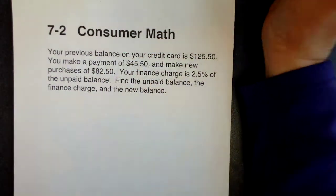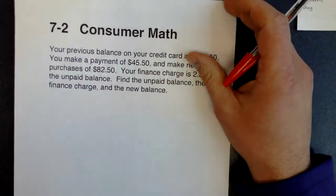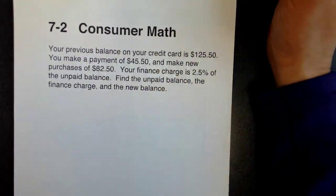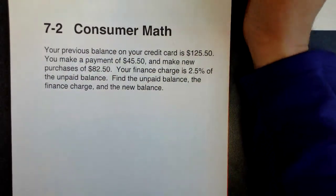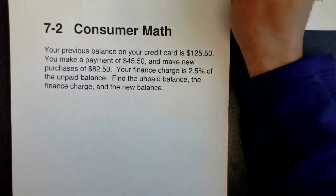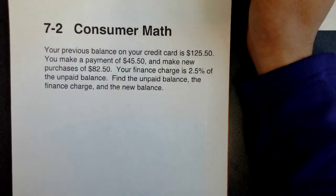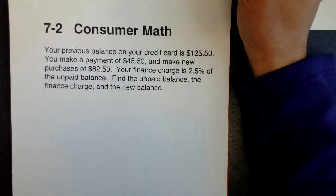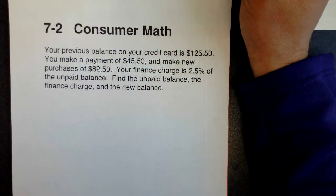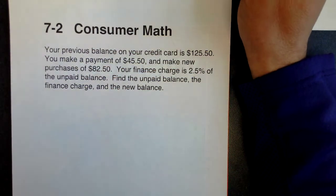In Section 2, we're going to find a few different things. We're going to find the new balance, kind of like we did in Section 1. We're going to find the unpaid balance, which is the amount of money you still owe on your credit card, and we're going to find the finance charge, which is the amount of interest you're being charged on that unpaid amount on your credit card.